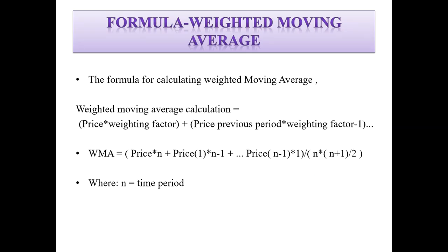Here is the formula for calculating the weighted moving average: it is the price multiplied by the weighting factor, plus the price of the previous period multiplied by the weighting factor minus one, and so on. Where n is the time period.